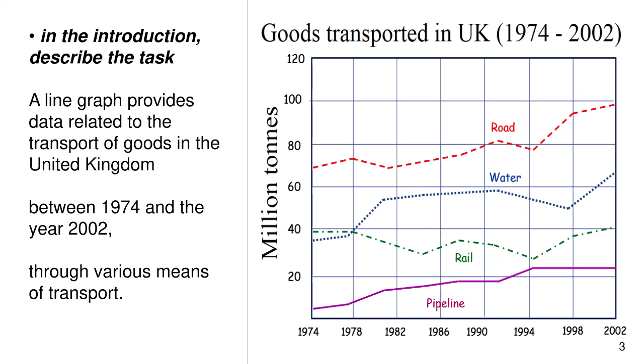In the introduction, describe the task. A line graph provides data related to the transport of goods in the UK between 1974 and the year 2002 through various means of transport.